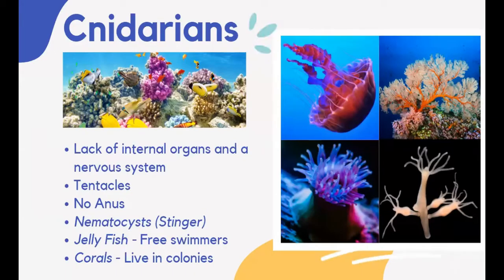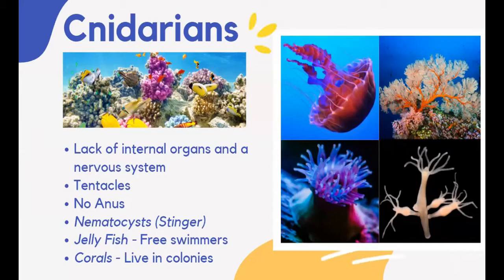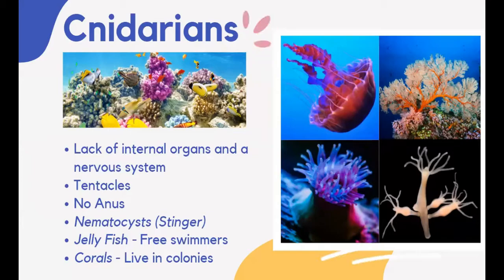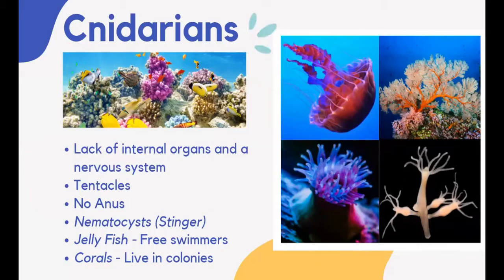Just like sponges, cnidarians are aquatic animals. Jellyfishes, sea fans, sea anemones, hydras, and corals are cnidarians. Cnidarians lack internal organs and a nervous system. They are hollow-bodied animals with only one opening. Their mouth is surrounded by finger-like projections called tentacles, which are used in getting food. They feed on algae or zooplanktons and take in oxygen directly from the water. Tentacles undergo diffusion to transport oxygen, nutrients, and waste. Cnidarians have no anus; they excrete waste through their mouth.